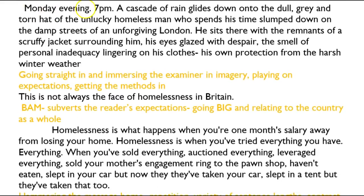Let's have a read of Kimi's writing. 'Monday evening. 7 p.m. A cascade of rain glides down onto the dull grey and torn hat of the unlucky homeless man who spends his time slumped down on the damp streets of an unforgiving London.' So Kimi has a curtailed sentence — it's not a proper sentence, it has no verb. 'Monday evening.' Same with '7 p.m.' But look at the rhythm it creates: 'Monday evening. 7 p.m.' — it's quite hostile.